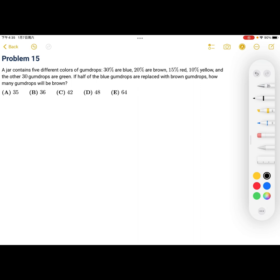A jar contains five different colors of gumdrops. 30% are blue, 20% are brown, 15% red, 10% yellow, and the other 30 gumdrops are green. If half of the blue gumdrops are replaced with brown gumdrops, then how many gumdrops will be brown?